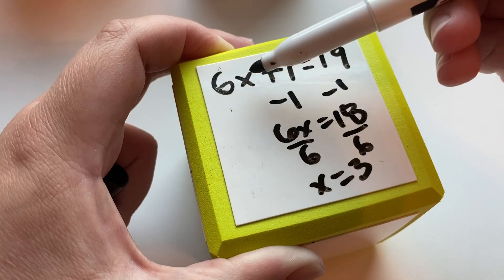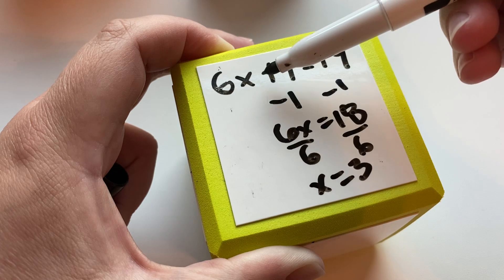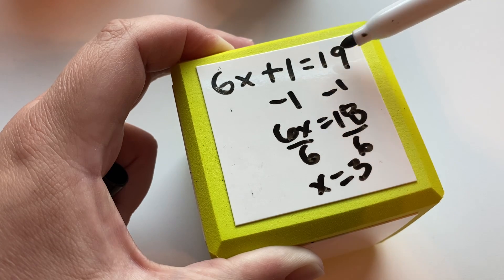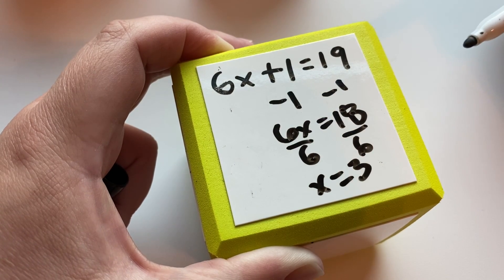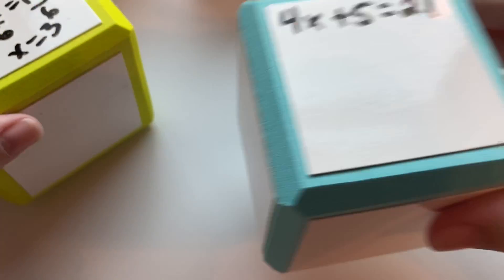You can plug that back in up here and do 3 times 6—or 6 times 3, I should say—plus 1 equals 19, which is true. Which means that that is the correct x value. And let's just look at one more example.